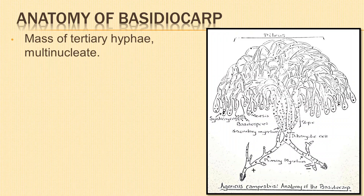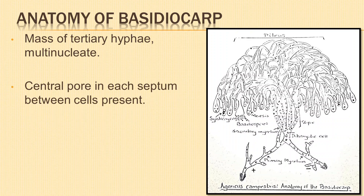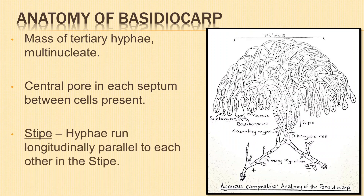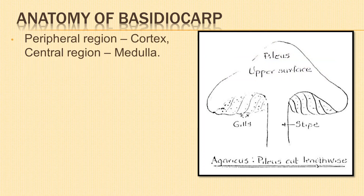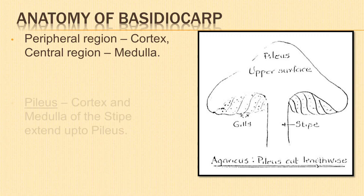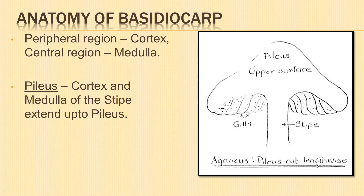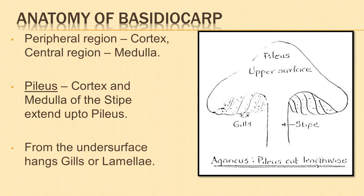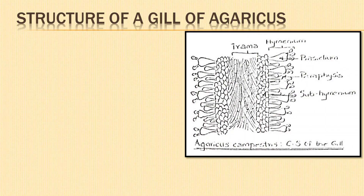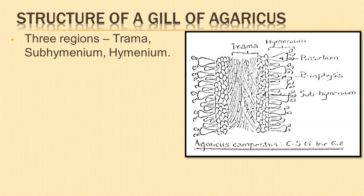The entire fructification is a mass of tertiary hyphae which are multi-nucleate, with a central pore in each septum between the cells. In the stipe, the hyphae run longitudinally parallel to each other. They are compactly arranged in the peripheral region known as the cortex, and loosely arranged with intercellular spaces in the central region known as the medulla. The cortex and medulla of the stipe extend up to the pileus, from the under surface of which hang the gills or lamellae.